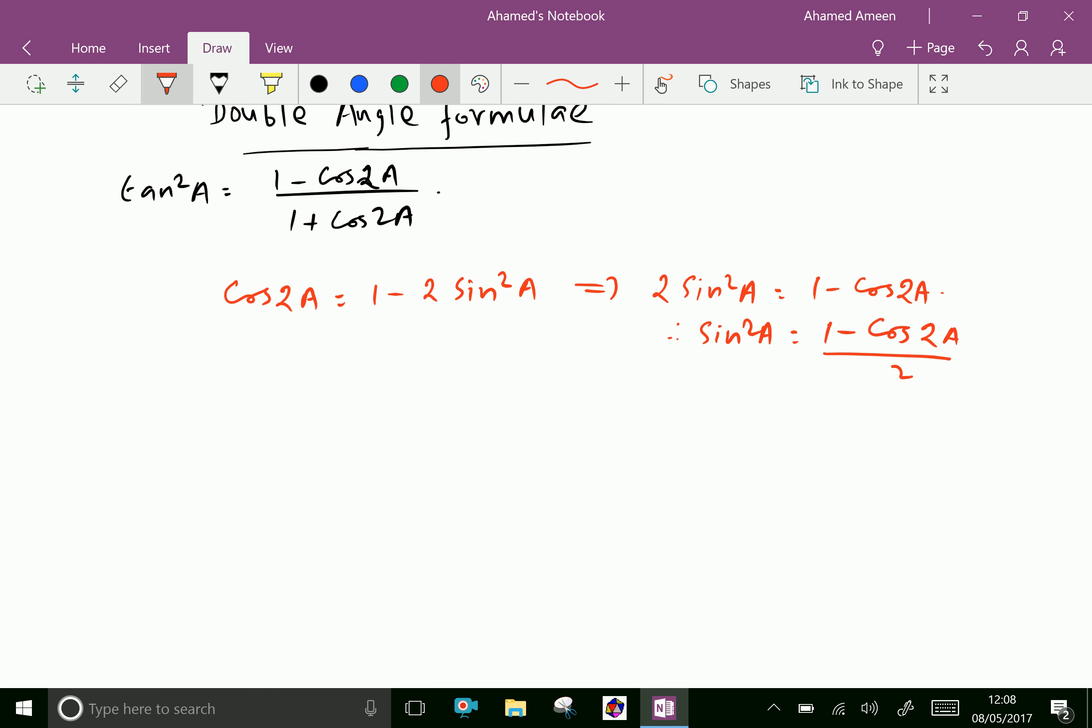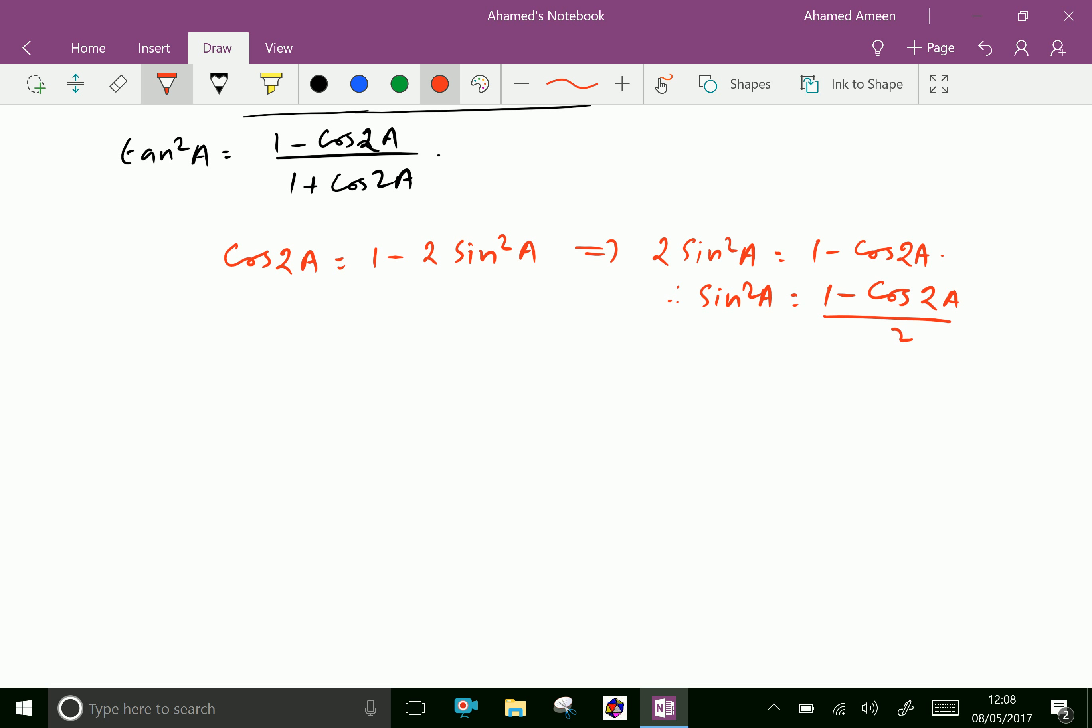Similarly, cos 2A we can write as 2 cos squared A minus 1, which is given like...